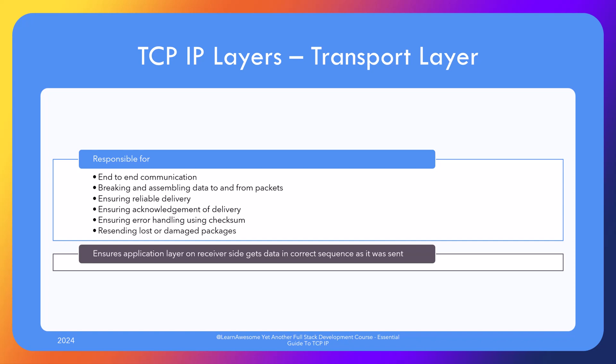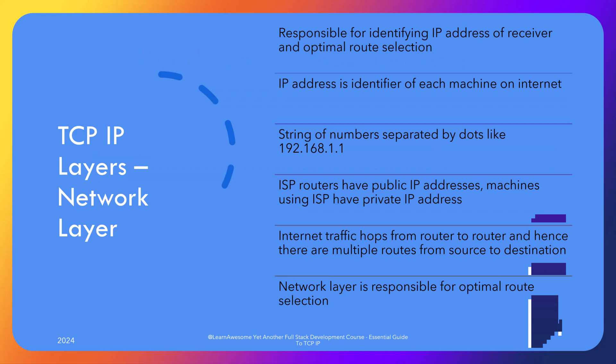The transport layer does not care how and when the packets it created are shipped — that is the job of the postal department in your office. This introduces the third actor: the network layer. The network layer is responsible for not only determining the client address but also the route selection for packet delivery. Since we are now introducing machine-to-machine communication, the address is what is called an IP address, short for Internet Protocol Address.